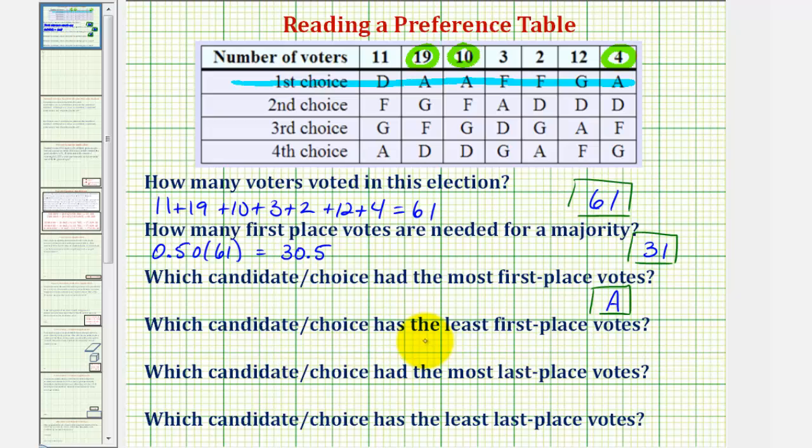Next, we're asked which candidate or choice has the least first choice votes. Here we have to be a little careful, because if a candidate did not show up here in this row, meaning they did not receive any first choice votes, that would be the candidate with the least first place votes. But every candidate does appear in this row, therefore every candidate did receive at least some first choice votes. Looking at candidate F, F received only 3 plus 2, or 5 first place votes, which is the least. So this would be candidate F.